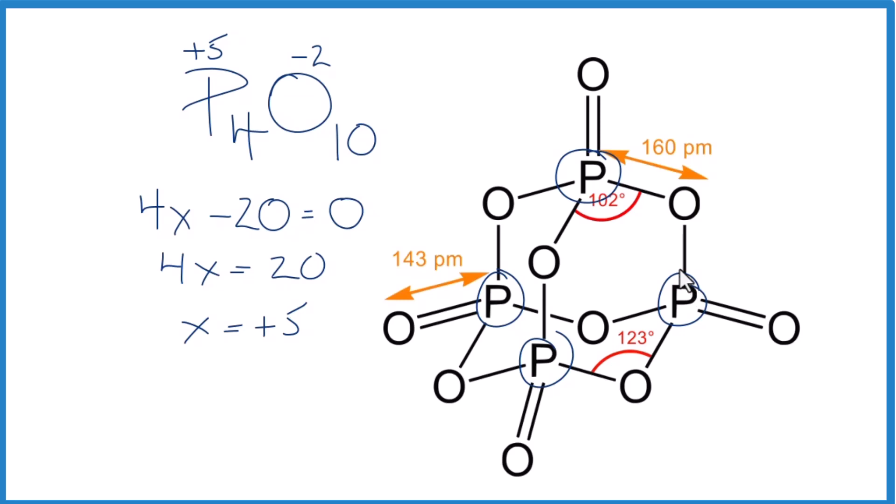That's it. This is Dr. B looking at the oxidation numbers for P2O5, which really doesn't exist. It's P4O10. Thanks for watching.